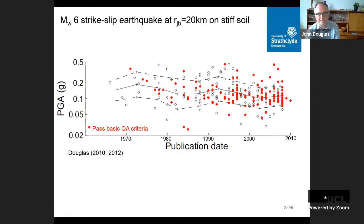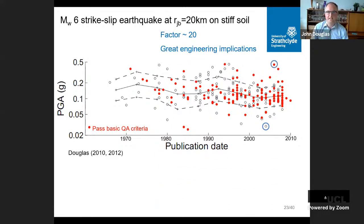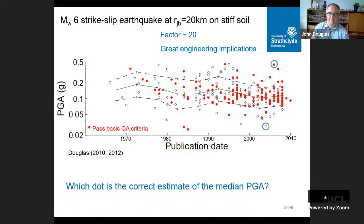An example of epistemic uncertainty: plotting predicted PGA from a couple of hundred GMPs published until 2010 for a single scenario — a magnitude 6 strike-slip earthquake at 20 kilometers on a stiff soil site — shows very large scatter in predictions. Using one model gives a prediction of about 0.03g; another gives a value perhaps 20 times larger. This obviously has great influence on the results of any engineering calculation using these GMPs.